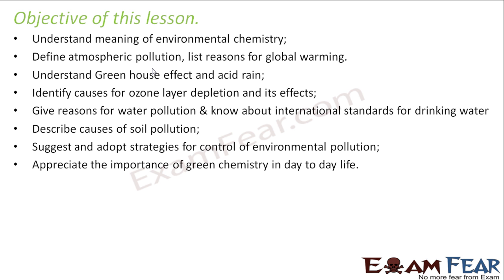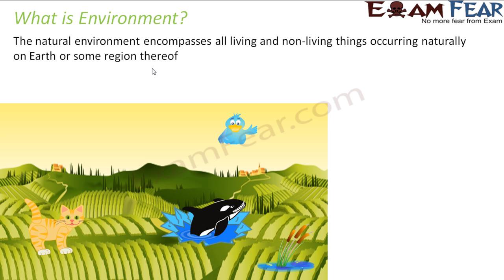These are the things we will cover in this chapter. First, we will start with the environment, because the whole chapter is about environmental chemistry. Let us understand what the environment is. Environment, as per definition, is the natural environment that encompasses all living and non-living things that occur naturally.